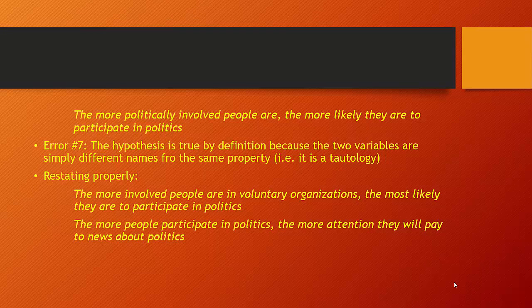Here's our last example: 'The more politically involved people are, the more likely they are to participate in politics.' This contains our seventh error — this hypothesis is true by definition because the two variables are simply different names for the same property. This is a tautology. Restated properly, we might say: the more involved people are in voluntary organizations, the more likely they are to participate in politics. Or, using participation in politics as an independent variable: the more people participate in politics, the more attention they'll pay to news about politics.